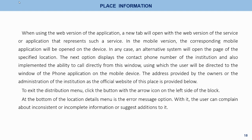The third block displays available photos of the location. If no photos exist, the interface prompts users to add photos using a button with a camera icon. Clicking the button opens a warning about conditions that must be met by uploaded photos. The last block contains additional options: opening the location in an alternative map service, viewing the contact phone number with a direct call option, and accessing the official website address. To exit the details menu, click the arrow button on the left side of the block.